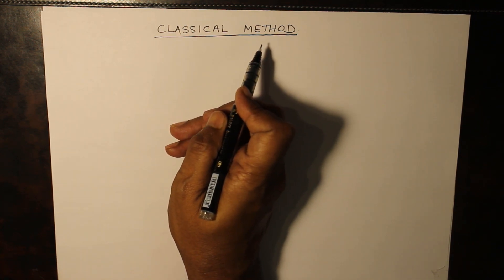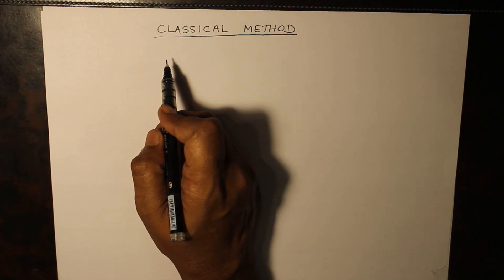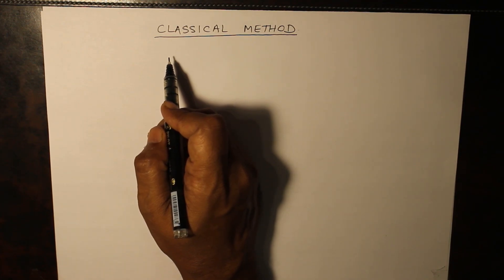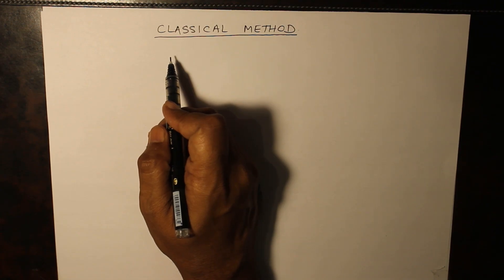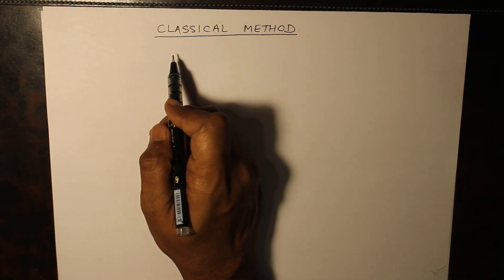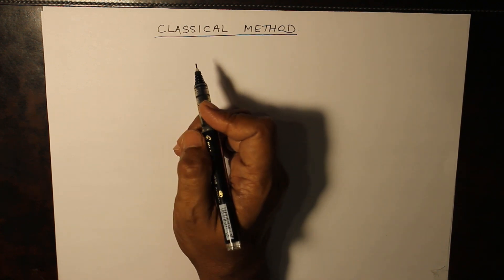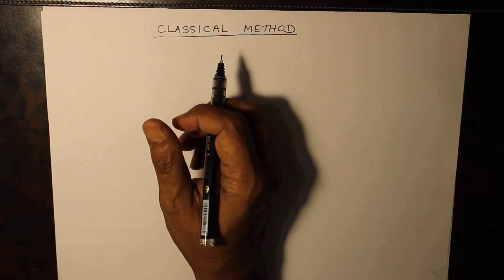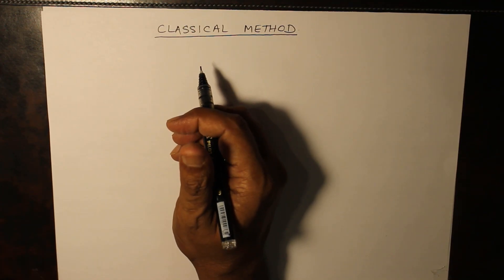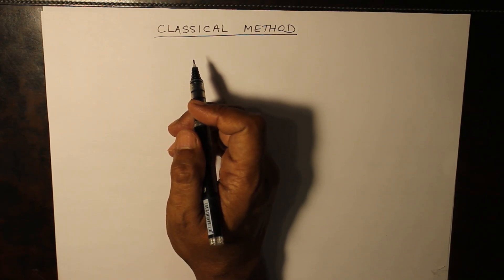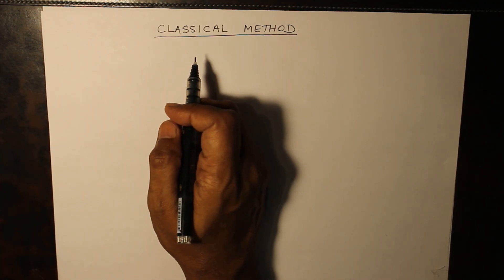Classical method of solving RLC circuits. All the questions solved so far by Laplace transform technique were done because the classical method used to pose a lot of problems. It was difficult to solve a higher order differential equation given the initial conditions and get the response. In the classical method, we will focus on finding initial conditions such as i(0), dI/dt at t=0, and d²i/dt² at t=0.